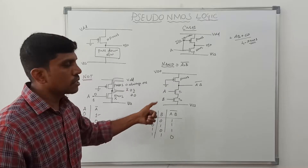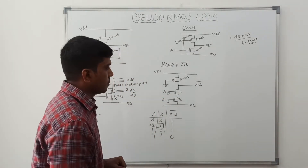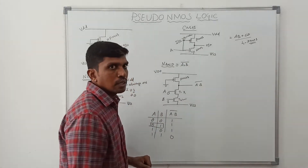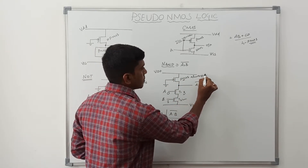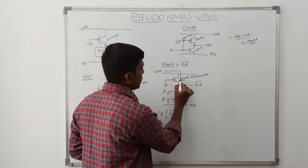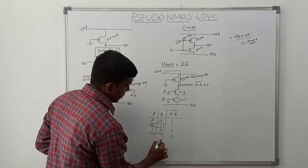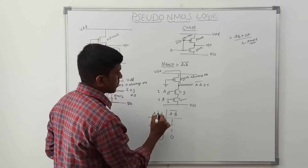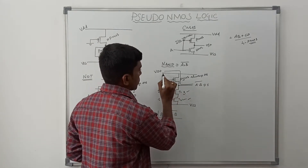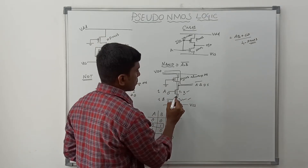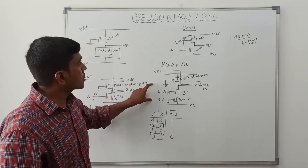Verifying the truth table with the logic circuit. Taking input A=0, B=1: T1 transistor turns off, T2 transistor turns on. T1 goes to high impedance state, but the PMOS transistor is always on. So VDD is connected to the output through the PMOS transistor, giving output 1. Taking A=1, B=1: T1 turns on, T2 turns on, and PMOS transistor is also on. VDD connects directly to ground through PMOS, T1, and T2, giving output 0. This is the simple structure of pseudo-NMOS logic.